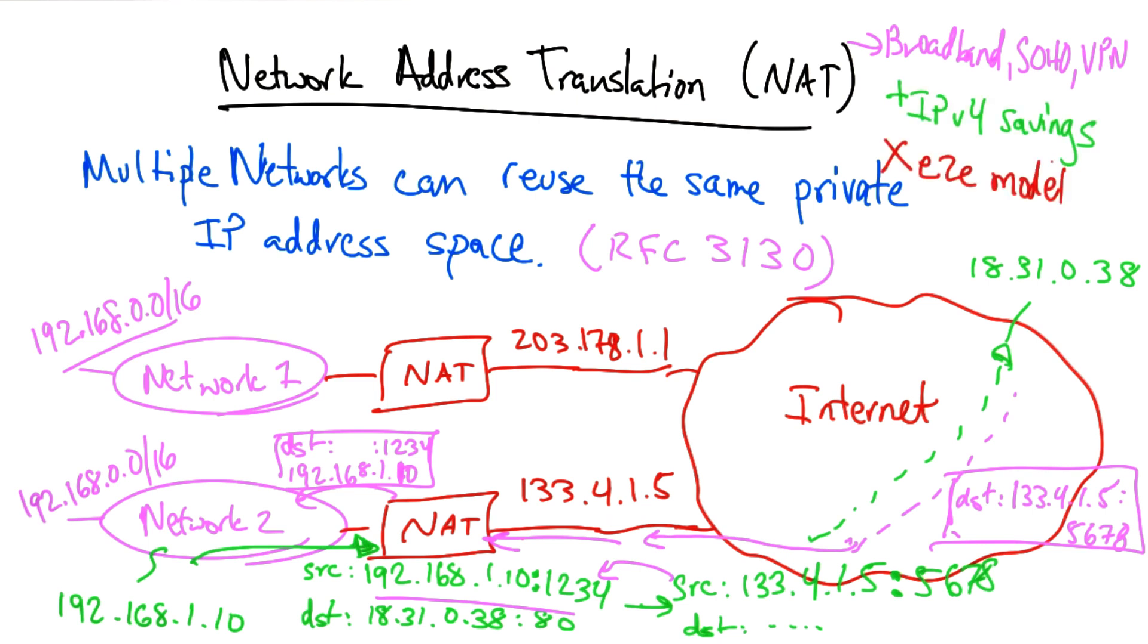The drawback, of course, is that the end-to-end model is broken. And we talked about the end-to-end model in a previous lesson, and let me just remind you how NAT breaks it. If the NAT device failed in this instance, for example, the mapping between the private source IP address and port and the public source IP address and port would be lost, thereby breaking all active connections for which the NAT is on the path.